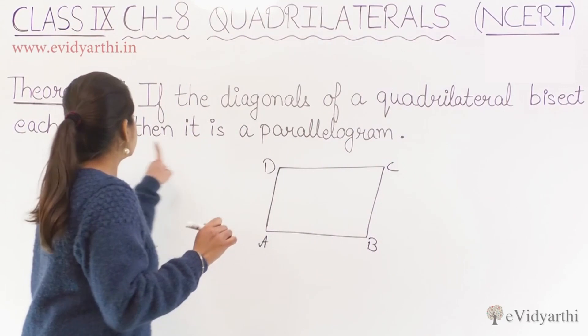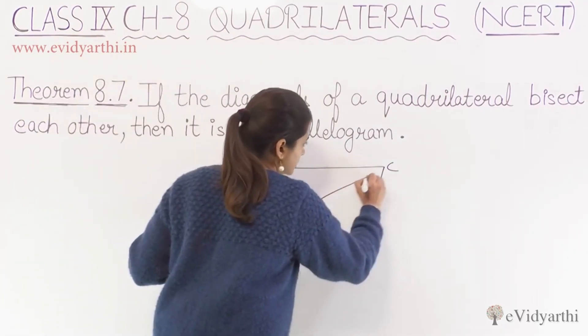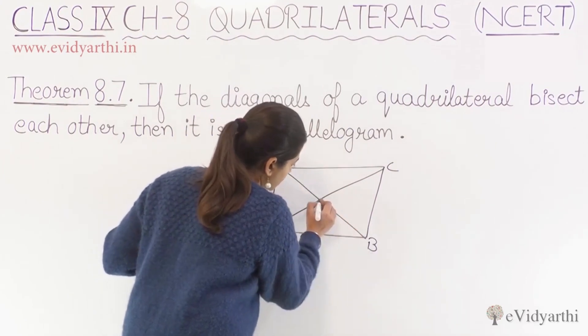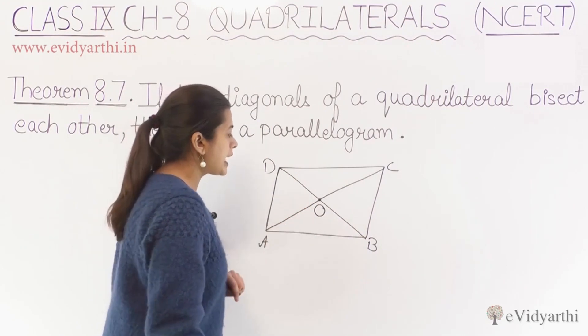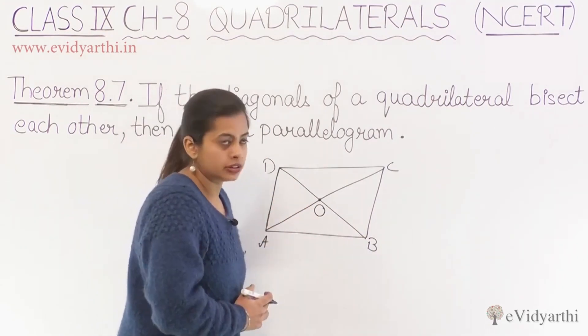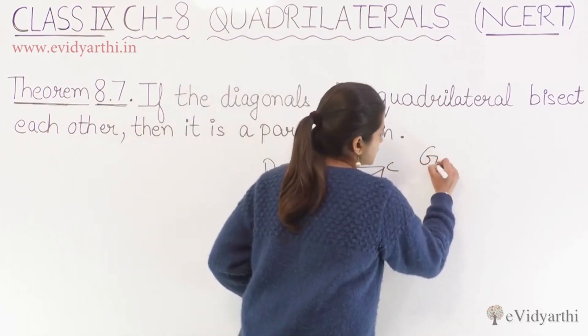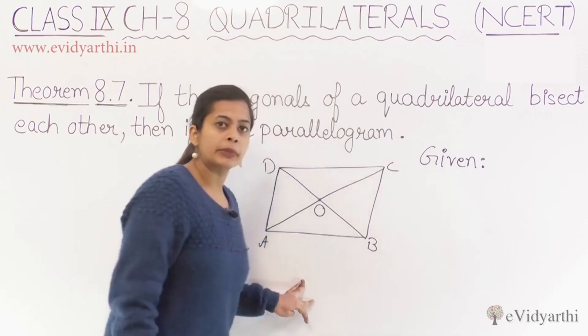Now if the diagonals bisect each other, we draw the diagonals. And here it is given that where they intersect, the two diagonals intersect at point O, and they are bisecting each other.